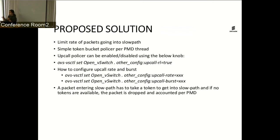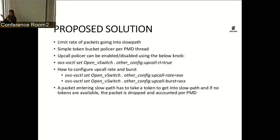The idea is to limit the number of packets that go into the slow path. We use a simple token bucket policer per PMD thread. This can be enabled globally with a knob, and we can configure the upcall rate and the burst using commands — the upcall rate as well as the upcall burst — which are given as input parameters when you initialize the token bucket policer.